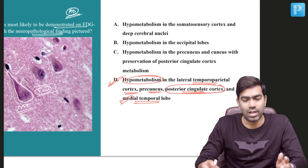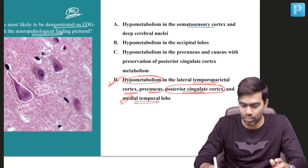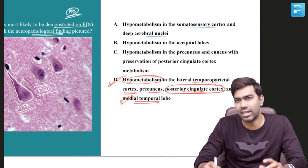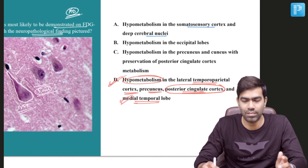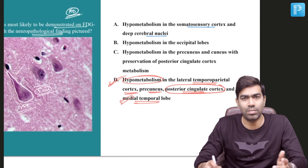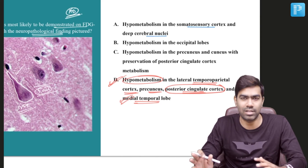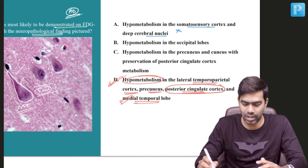Let us look at the other options. Option A states hypermetabolism in the somatosensory cortex and deep cerebral nucleus — this is very rare and is not going to happen in patients with Alzheimer's disease. In fact, even if it happens, it would be at the very last stages of Alzheimer's disease, so this is not the right answer.